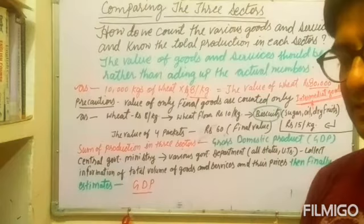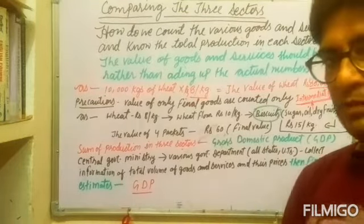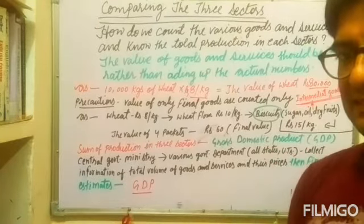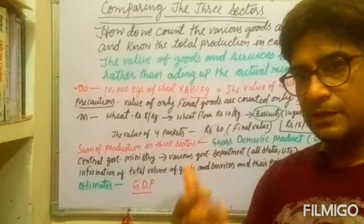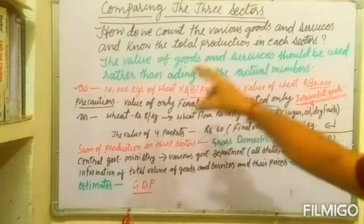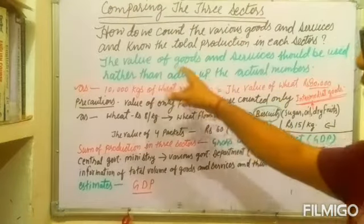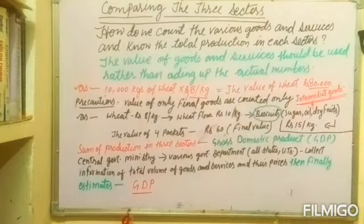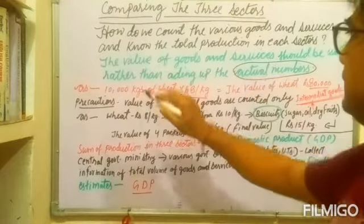This task has been made more efficient by calculating the value of goods, not the actual numbers. That is the key approach: to take the values of all final goods produced in each sector, because it is easier to count goods by value rather than by actual numbers. The value of goods and services should be used rather than adding up the actual numbers, which would be a very difficult task.